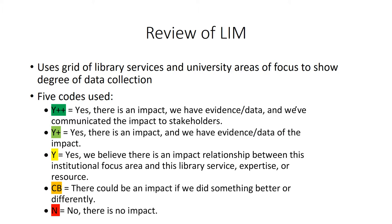For those of you who have previous experience or knowledge of library impact maps, this is a brief review. For those who have not heard of them before, this is a brief introduction. The library impact map uses a grid system where library services are the headers for columns and university areas of focus are the headers for rows. The intersection between each library service and university area of focus is populated with one of five codes indicating whether data is collected and the degree to which it is collected, used, and shared with stakeholders.